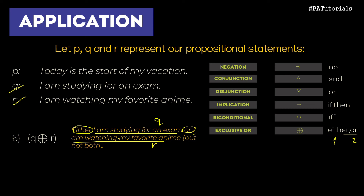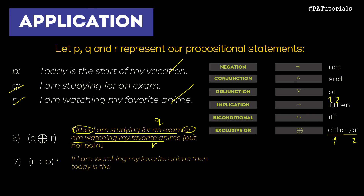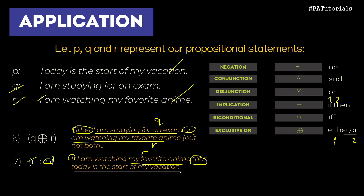Now let's try: R implies P. It's the same structure as before but with different variables — R and P. Using 'if...then,' with 'if' applied to R and 'then' to P, the result is: 'IF I am watching my favorite anime, THEN today is the start of my vacation.'